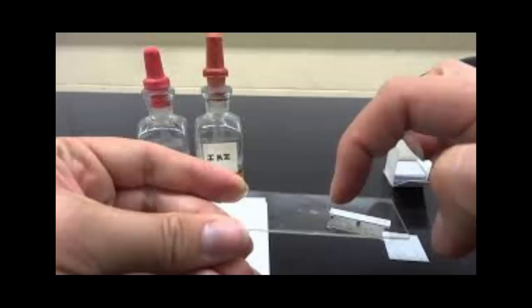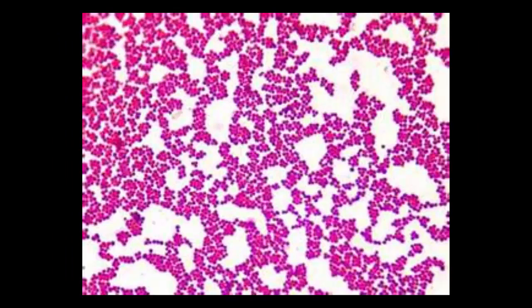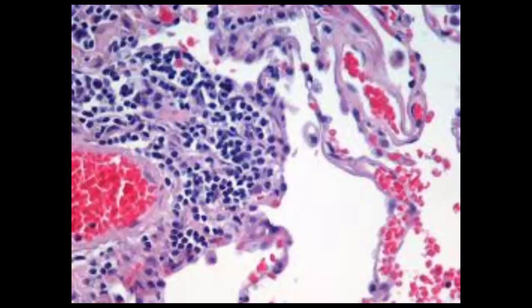Because light needs to pass through the specimen, it must be very thin and transparent. Light microscopes can magnify effectively to about 1,000 times the size of the actual specimen. Biologists use various techniques to enhance the contrast and enable cell components to be stained or labeled.